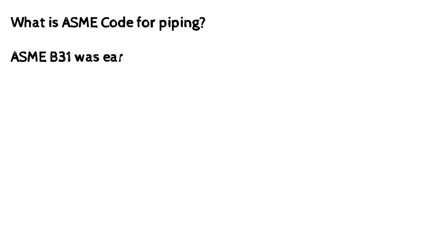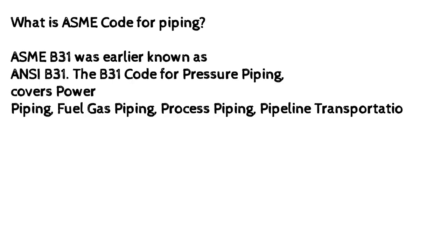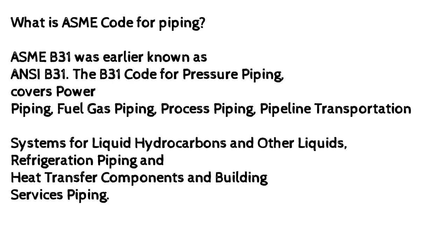What is ASME Code for Piping? ASME B31 was earlier known as ANSI B31 — the B31 code for pressure piping.